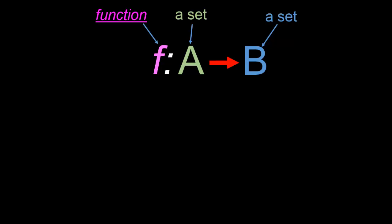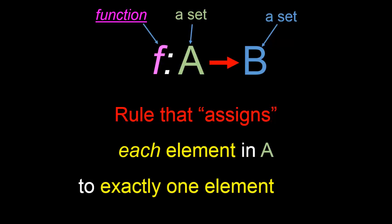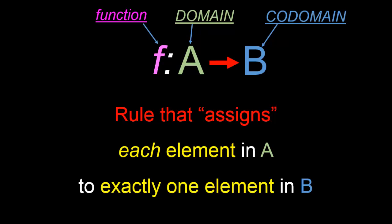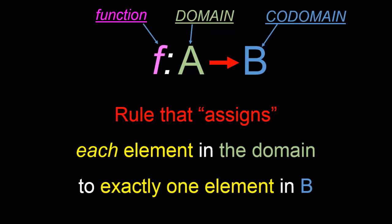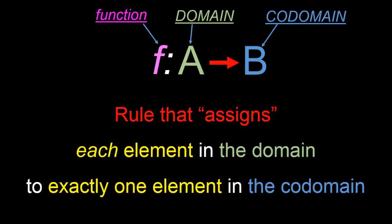Again, g maps cat to egg and g also maps dog to egg. So again, a function from the set A to the set B is simply a rule that assigns each element in A to exactly one element in B. When talking about any function, it is very important to specify what the sets A and B are. Indeed, it is so important that the sets A and B have special names: A is called the domain of f and B is called the co-domain of f.